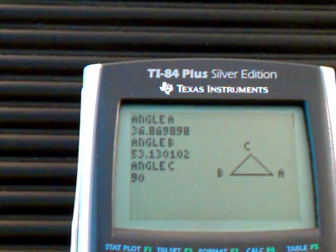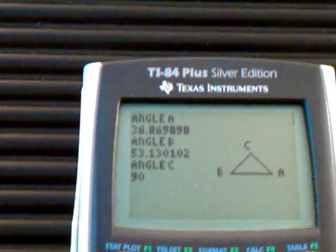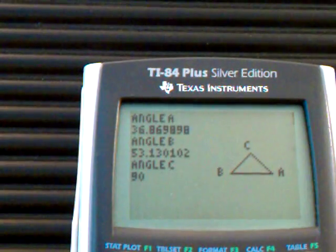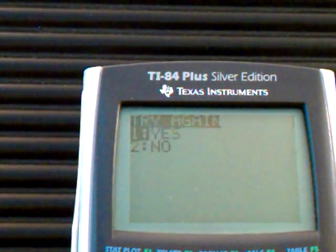And then it tells me each angle, using law of sines or law of cosines. I usually like law of cosines better because it's easier. And in this case, I'm going to say no, I'm not going to try again.